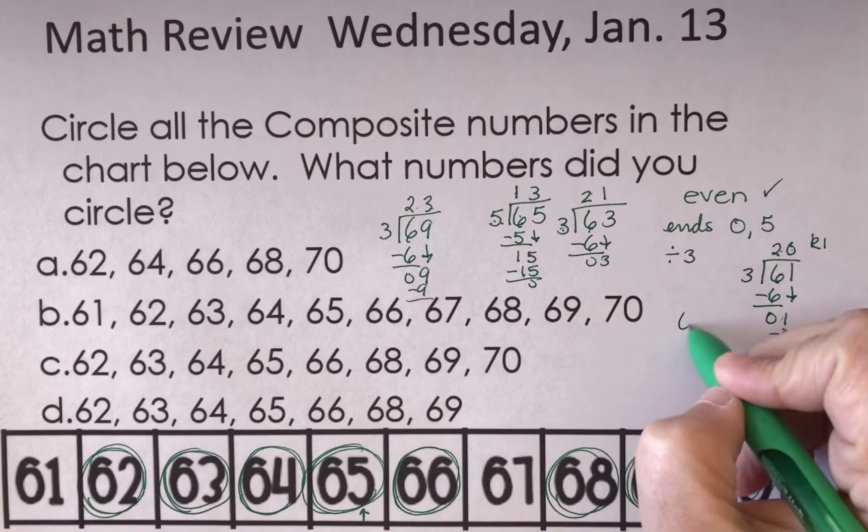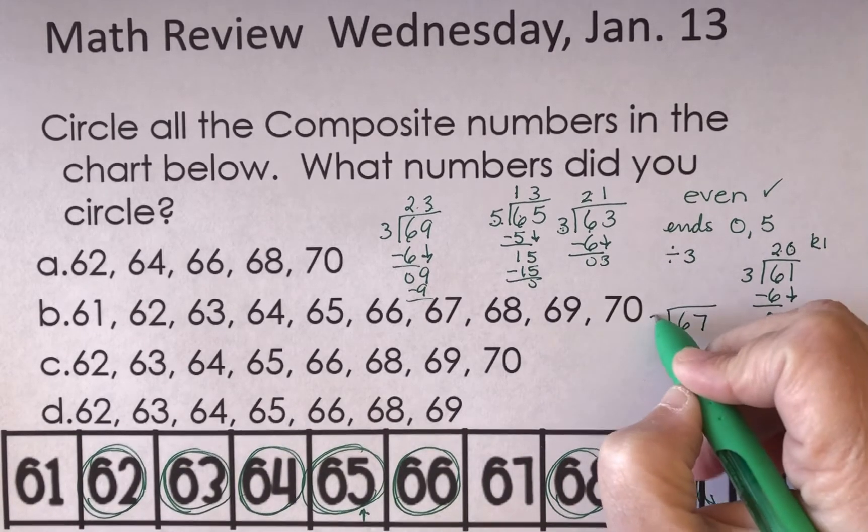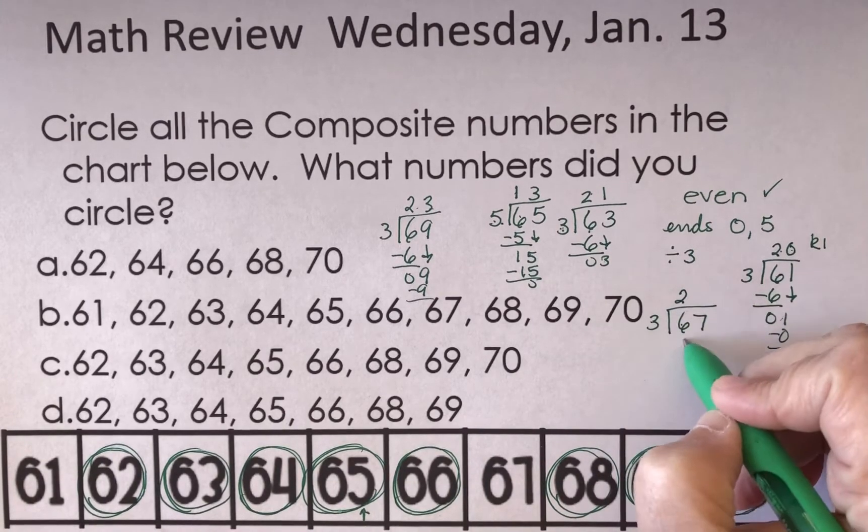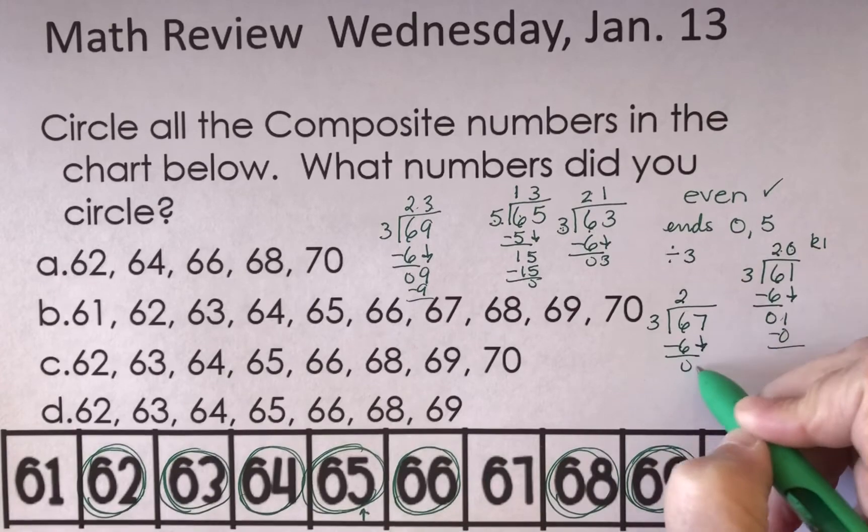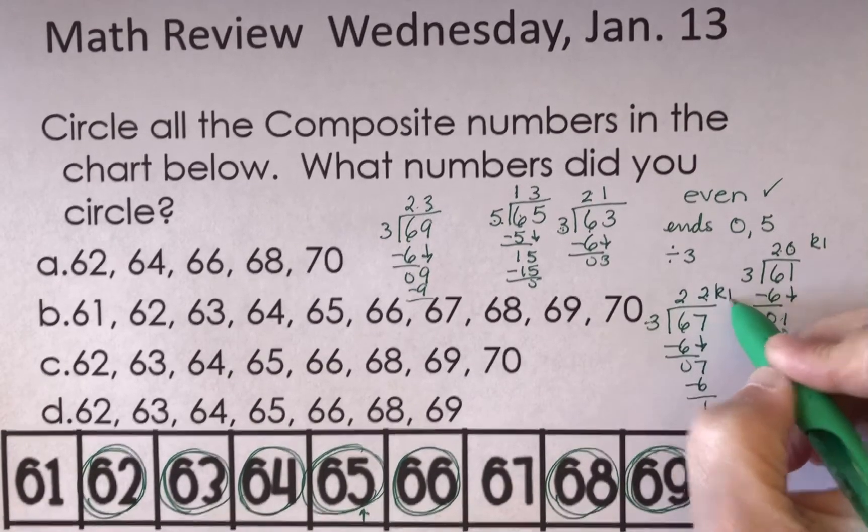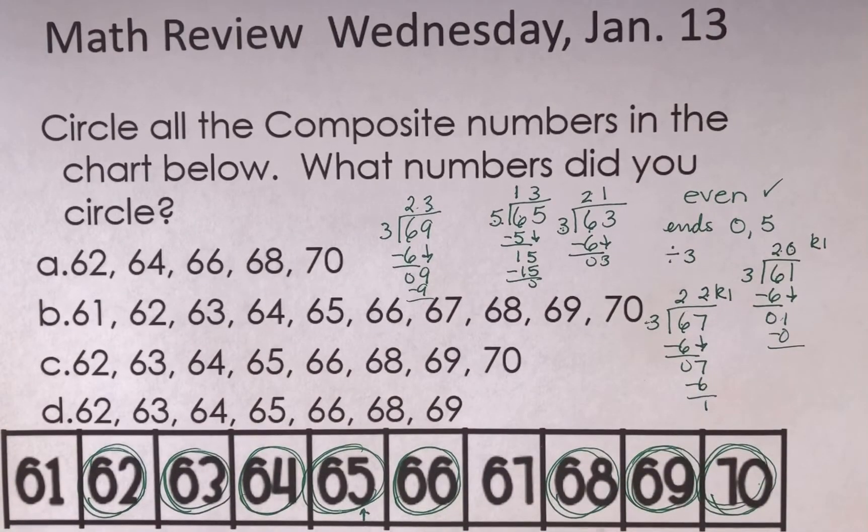Let's try with the 67. Divide by 3. 3 goes into 6 two times. 2 times 3 is 6. I subtract. I bring down the 7. 2 times 3 is 6. I have a remainder of 1. That's not a composite number.